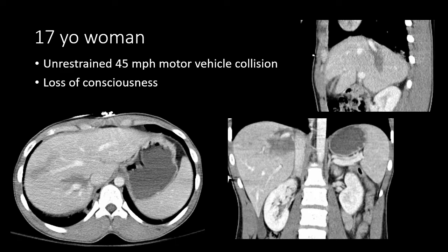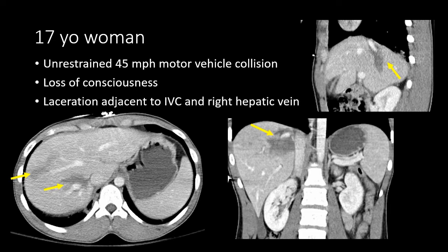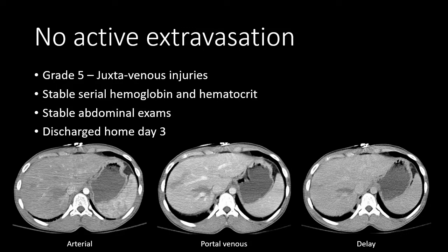Here we have a 17-year-old woman, unrestrained driver in a 45 mile-per-hour collision presenting with loss of consciousness. We can see multiple injuries to the liver — areas of hypo-enhancement or low density within the liver, which may qualify as contained hematomas, but this is more of a laceration with an associated hematoma. In coronal and sagittal views, that laceration or hematoma encompasses the right hepatic vein and extends right up to the IVC, indicating central venous involvement.